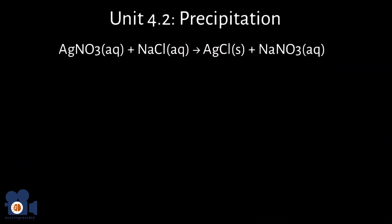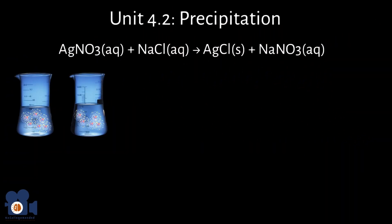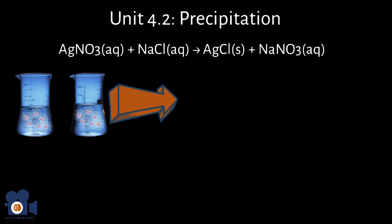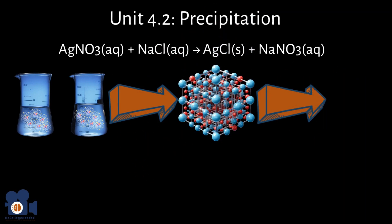This is due to the atoms reacting between the silver nitrate and sodium chloride that used to be dissolved, becoming more ordered, and thus precipitating out due to their low solubility.